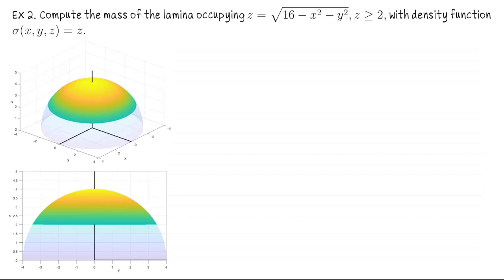We want to compute the mass of the lamina occupying the region in R³ described by Z = √(16 − X² − Y²) with Z ≥ 2, with density function σ(X, Y, Z) = Z. This is part of the upper hemisphere of radius 4, but only the part sitting above the plane Z = 2. We'll parametrize the surface, evaluate the density function on the parametrization, compute the cross product and its length, then set up and solve the integral for the mass.